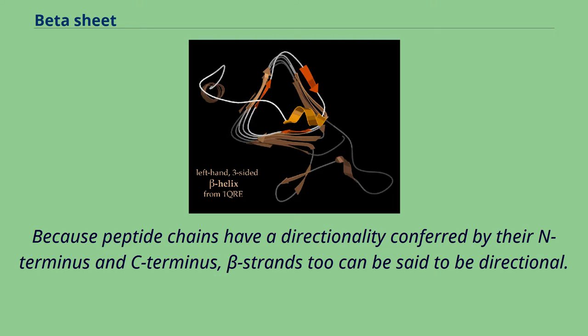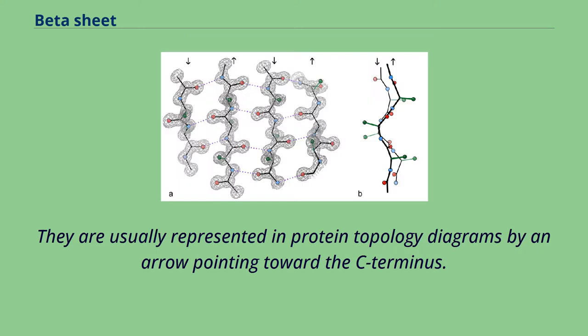Because peptide chains have a directionality conferred by their N-terminus and C-terminus, beta strands too can be said to be directional. They are usually represented in protein topology diagrams by an arrow pointing toward the C-terminus.